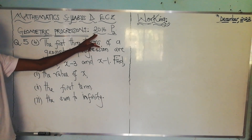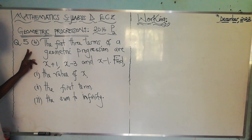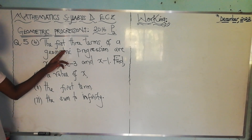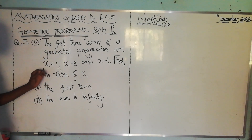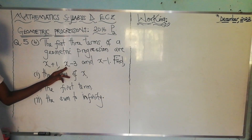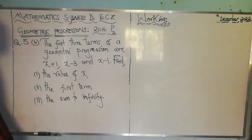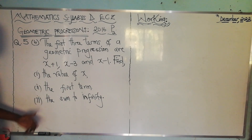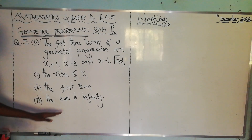The question is from 2016 Paper 2, Question 5. Question 5b is saying: the first three terms of a geometric progression are x plus 1, x minus 3, and x minus 1. We need to find the value of x, find the first term, and find the sum to infinity.